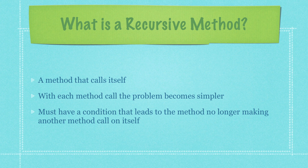So what exactly is a recursive method? It's just a method that calls itself, and with each method call the problem is going to become simpler and simpler. The only condition with a recursive method is that it will eventually lead to a point where the method no longer calls itself.